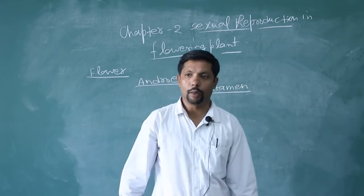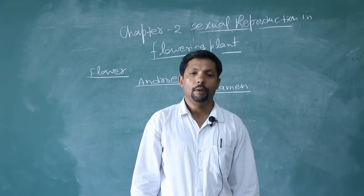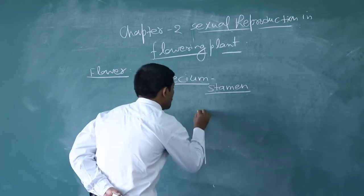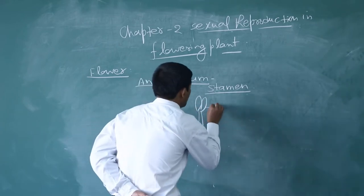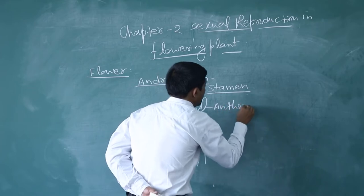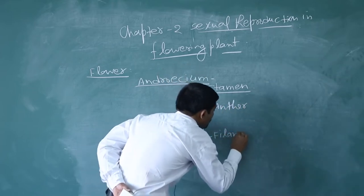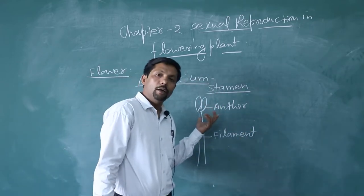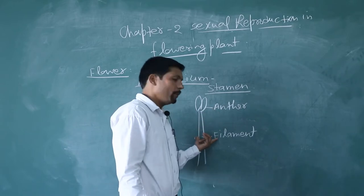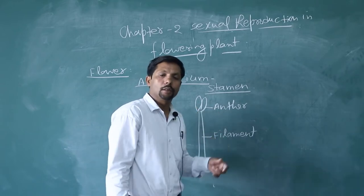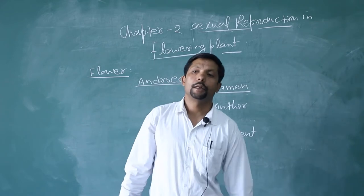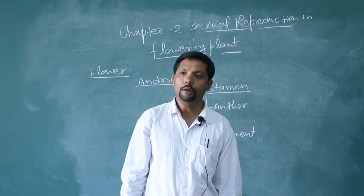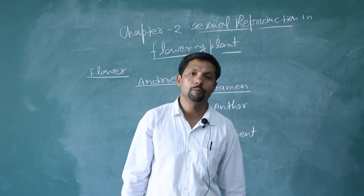Each stamen has two parts: filament and anther. Anther is the part where the pollen grains are produced. The filament attaches the anther to the thalamus of the flower.